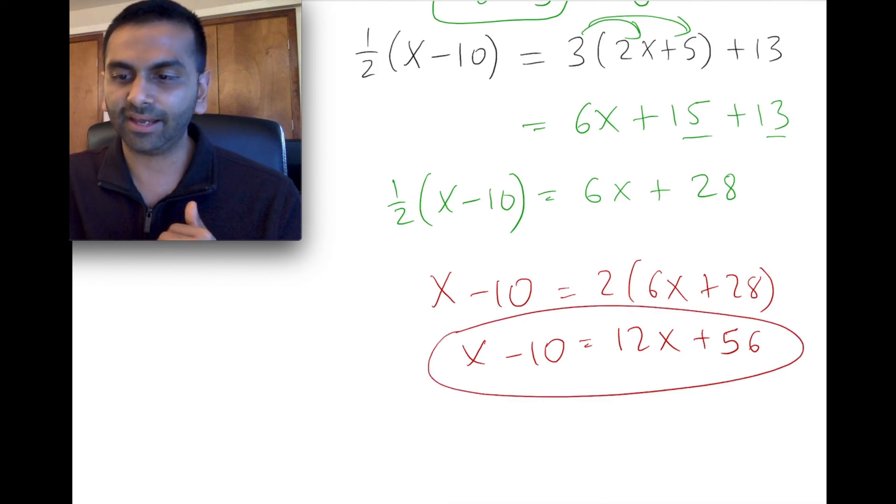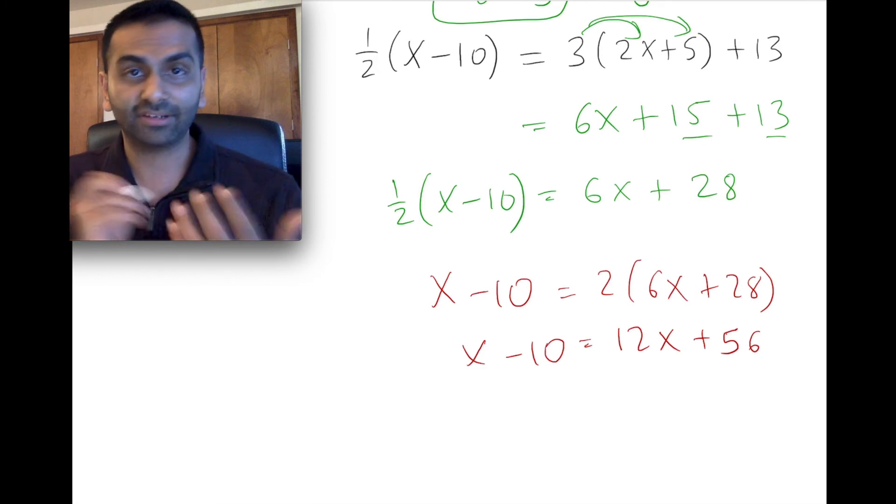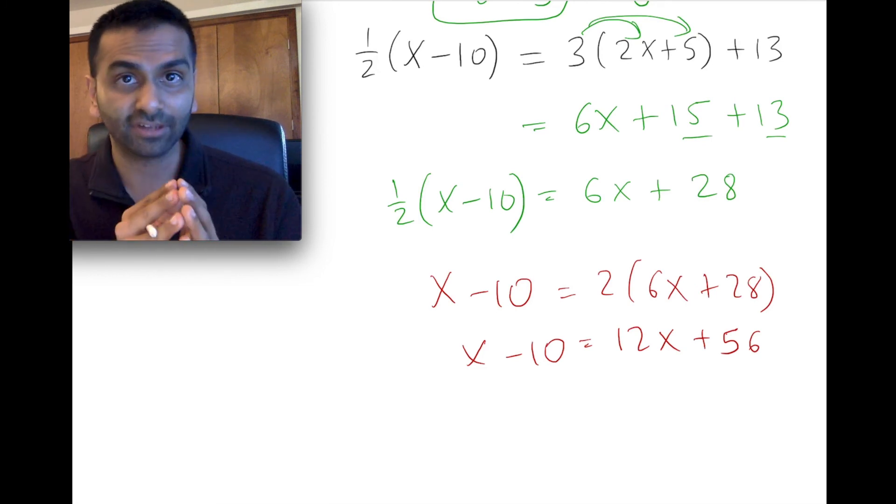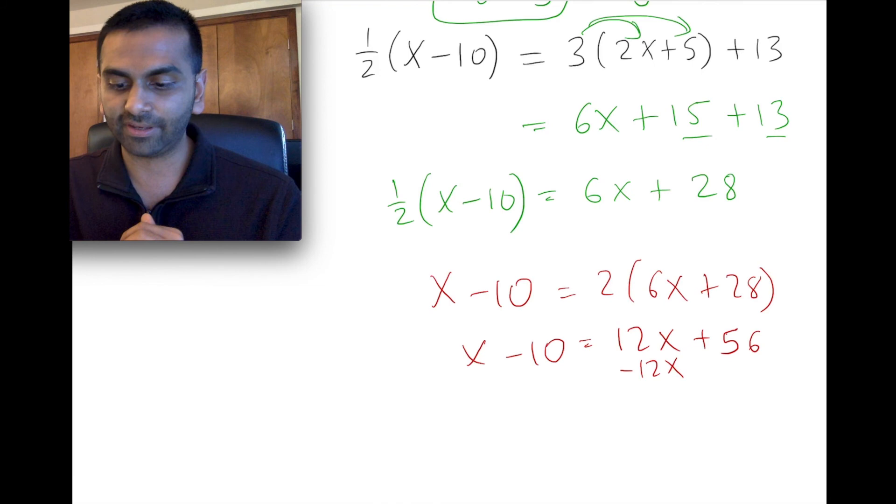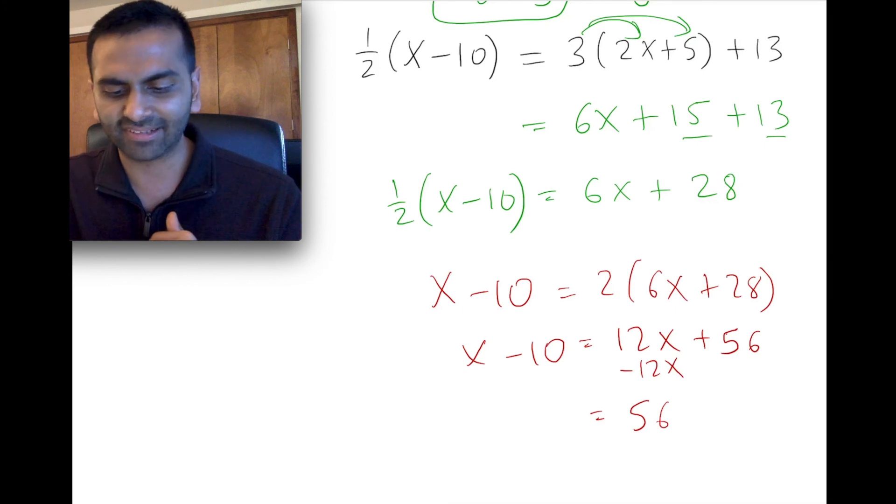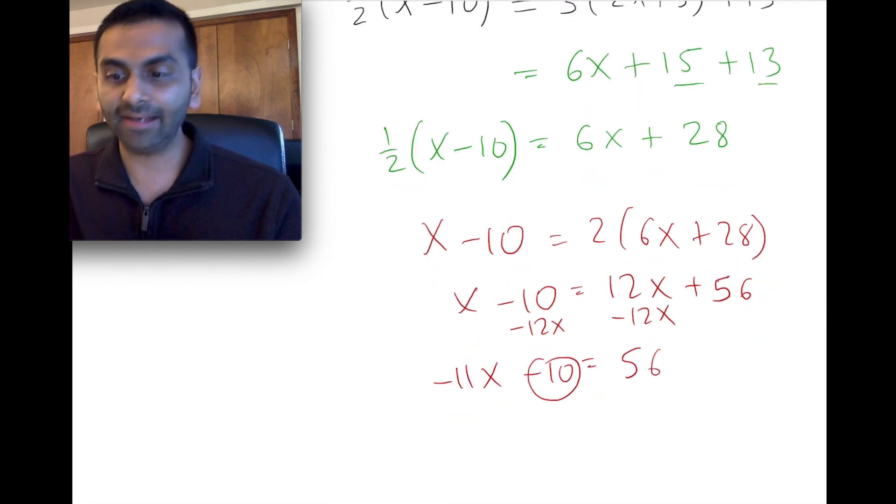All right. Now this is a much easier thing to handle. And so, again, to solve for both sides, you can collect all the x's on one side and the constants on the other side. It doesn't matter which side is which. So here if I subtracted 12x from both sides, then it gets rid of it on the right-hand side, and I'm left with just 56. And here, x minus 12x is negative 11x. So again, I subtracted 12x from both sides, and I'm left with that. And now I can add 10 to both sides to get rid of that minus 10. So here I'm left with just a negative 11x equals, and 56 plus 10 is 66.